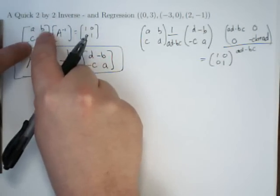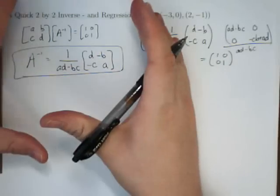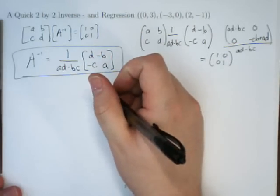Flop these, interchange the sign on those, divide by the determinant. Period. That's how you find inverses for 2x2s.